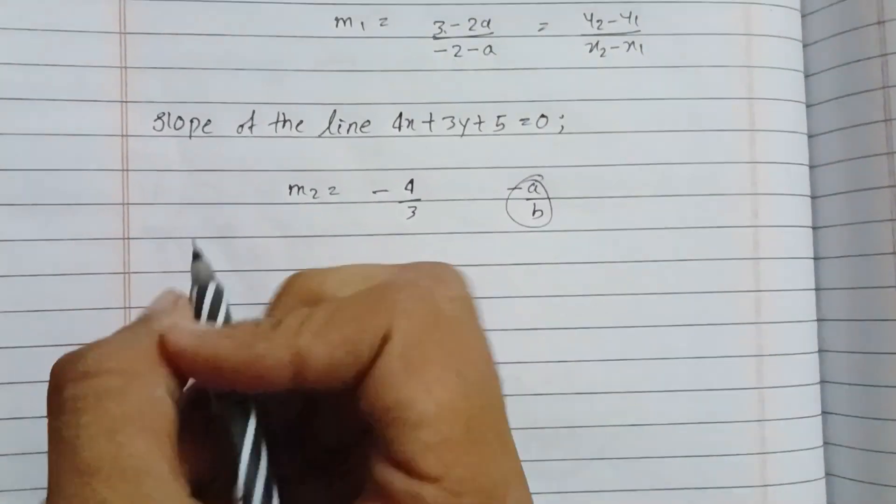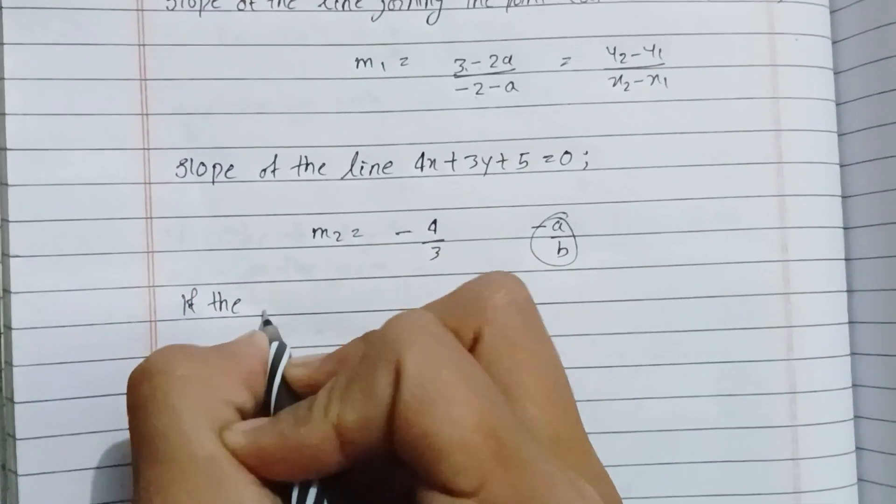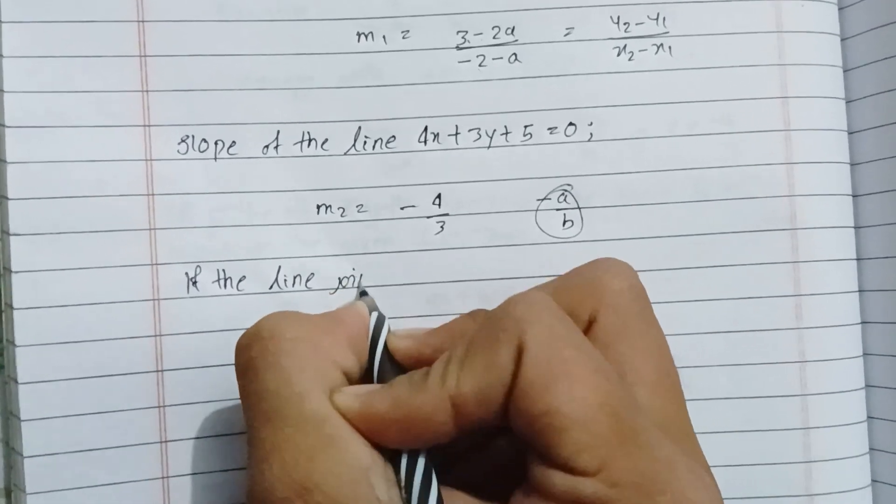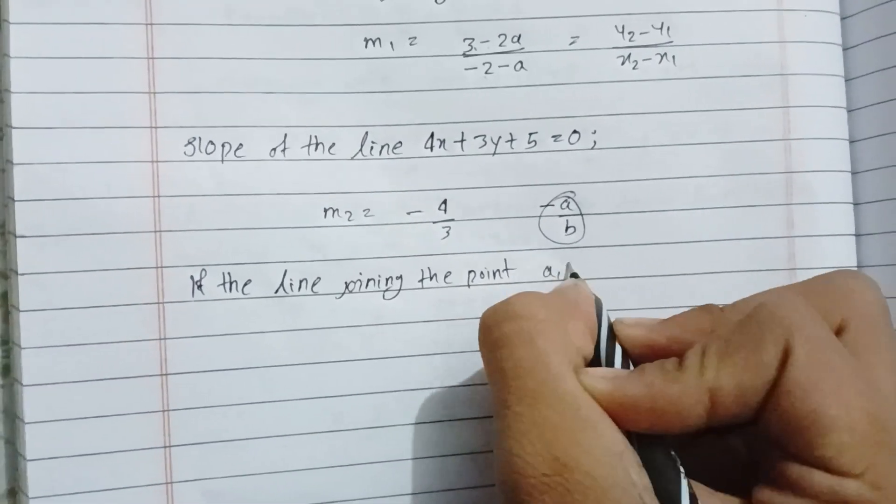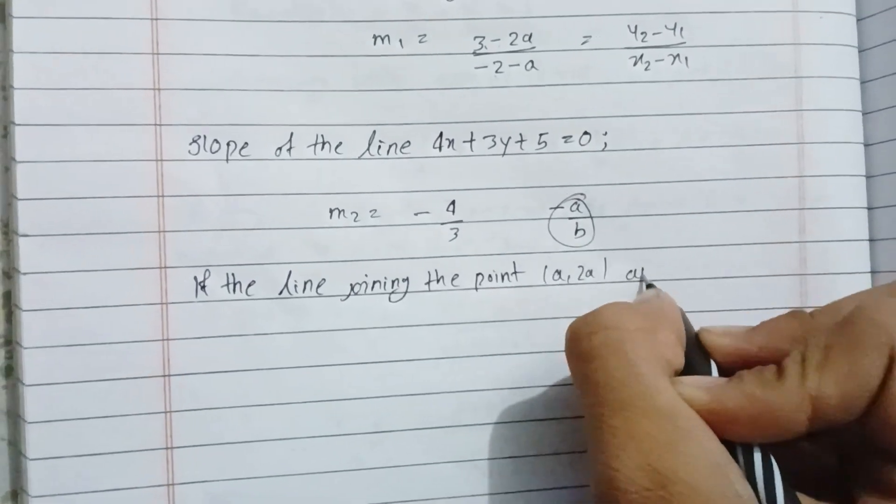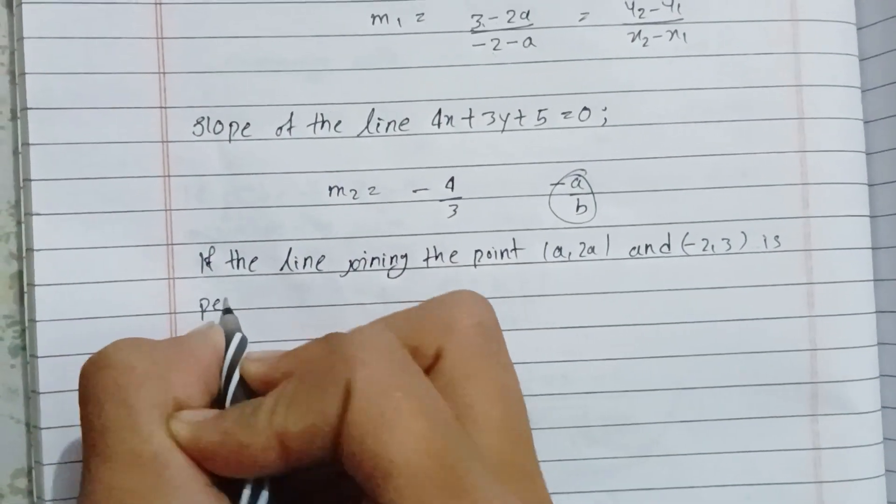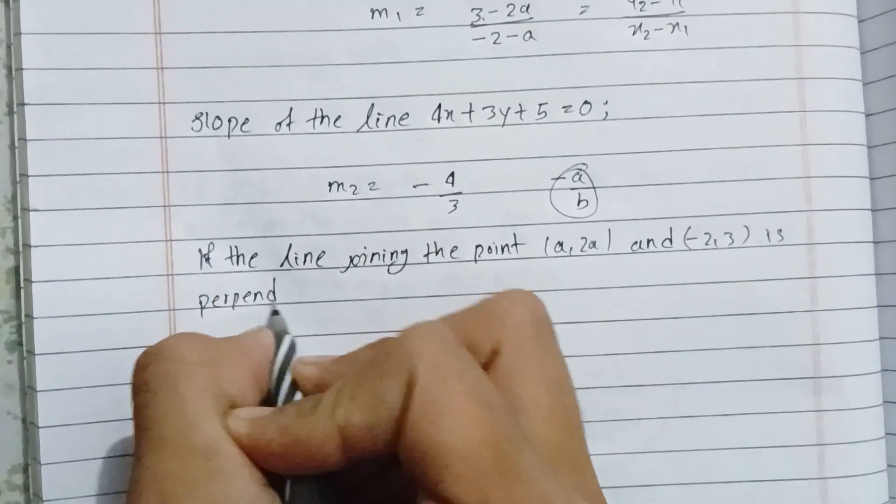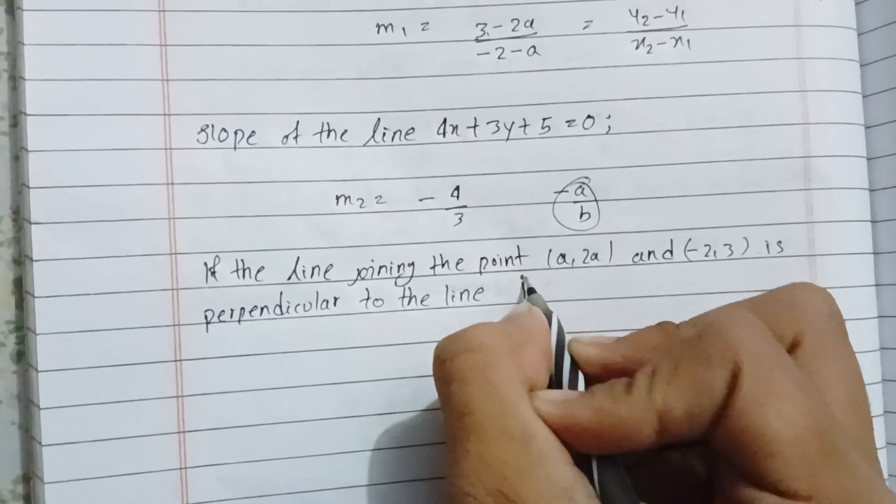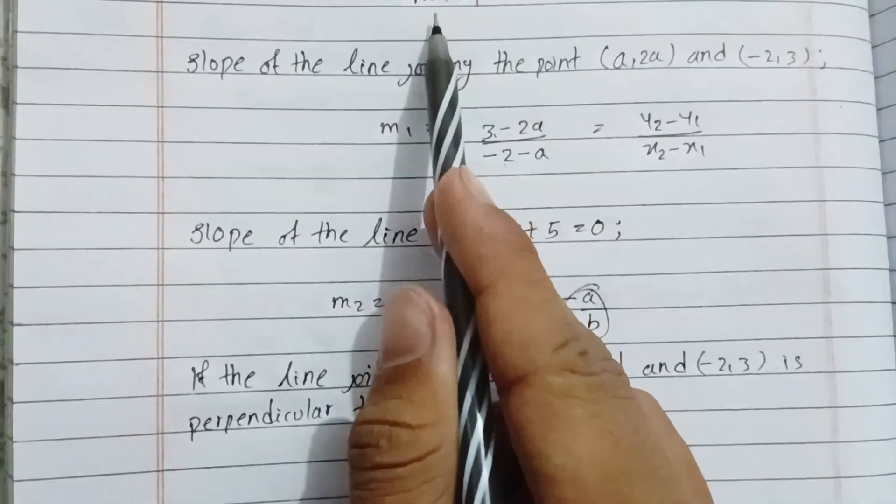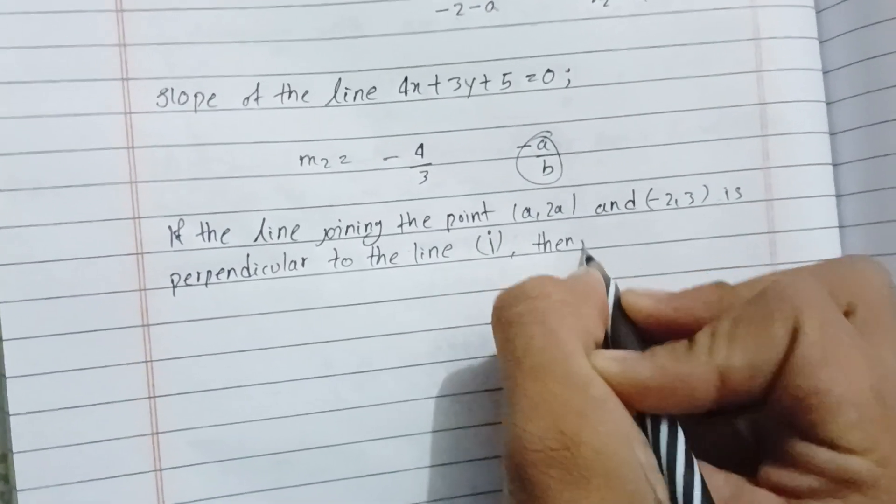If the line joining the points (a, 2a) and (-2, 3) is perpendicular to the line, then we can use the perpendicular condition.